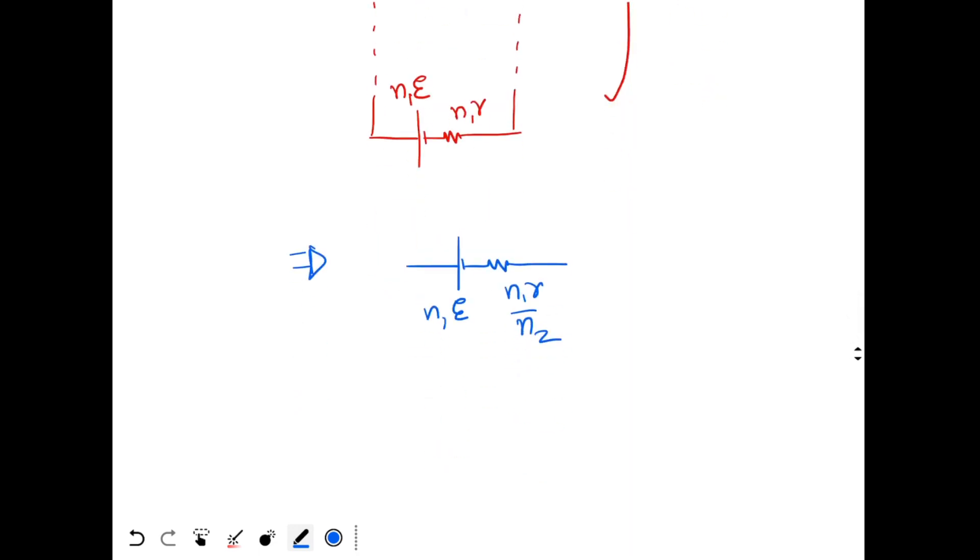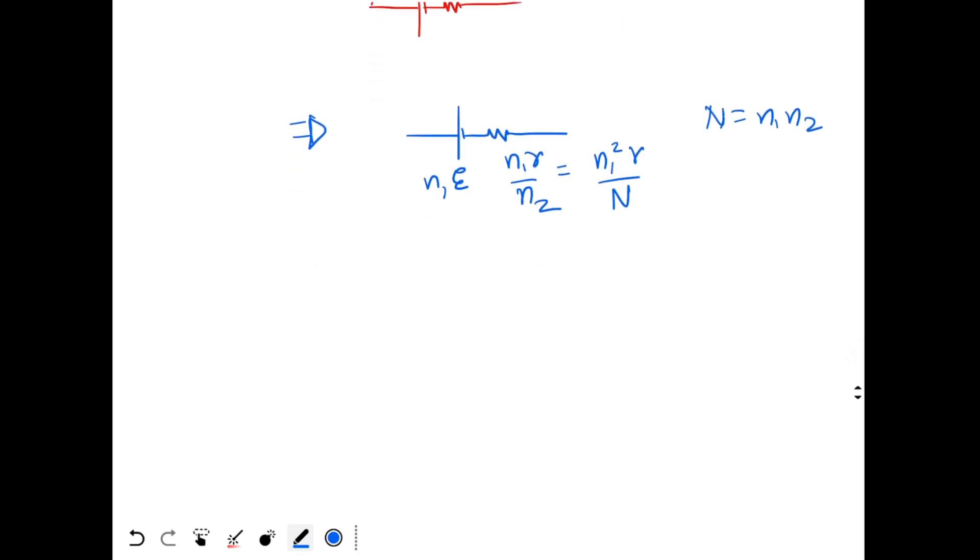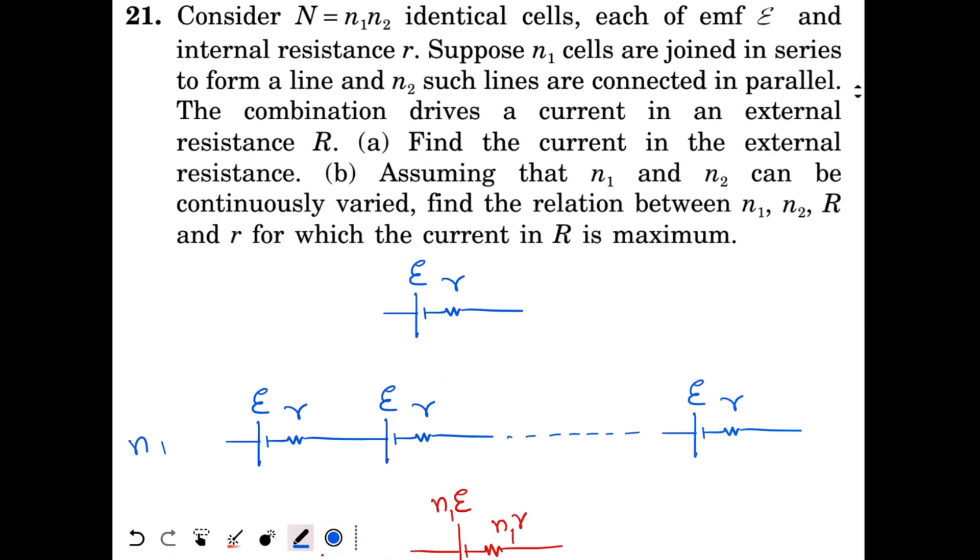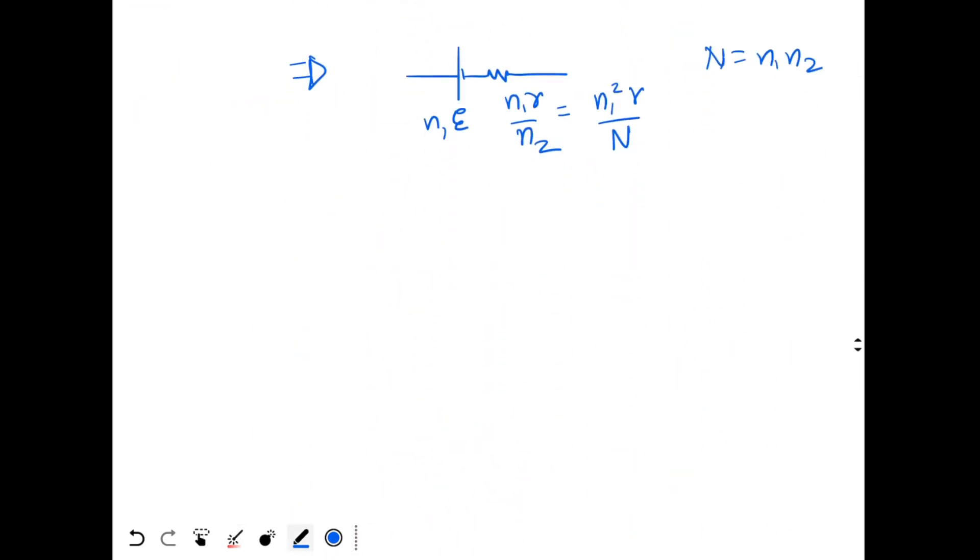But since N equal to N1N2, I could write N2 as N by N1. So I could write down my internal resistance as N1 square r by N. Now this battery has been connected to an external resistor. The combination drives a current in an external resistance R. And we have to find that current. So that's very easy part.